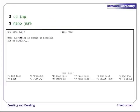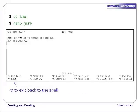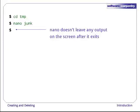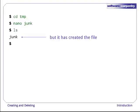Let's type in a short quotation, then use ctrl-O to write our data to disk. By convention, Unix uses the caret followed by a letter to mean ctrl plus that letter. Once our quotation is saved, we can use ctrl-X to quit the editor and return to the shell. Nano doesn't leave any output on the screen after it exits, but ls now shows us that we have created a file called junk.